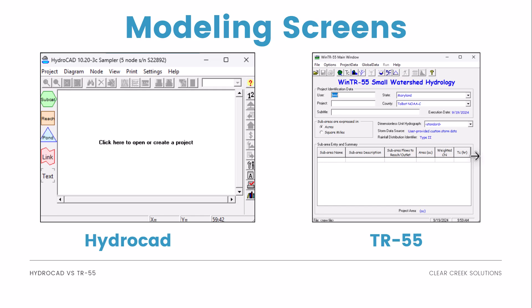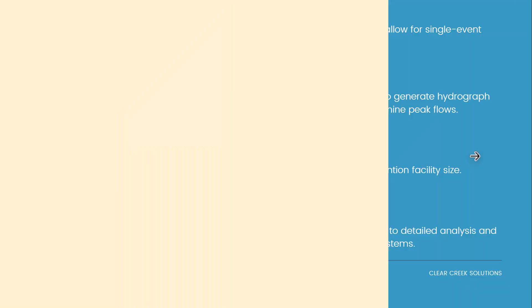On HydroCAD, you have a modeling screen on the left where you can add subcatchments, reaches, ponds, links, and perform a number of functions. TR55 has a modeling screen that can open up into many other smaller windows. You can also select the state and county for which you're performing the project to find a good rainfall distribution for your unit hydrograph.